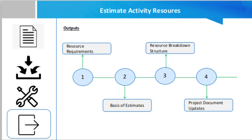Project document updates include the assumption log — the assumption log is updated with assumptions regarding the types and quantities of resources required. Additionally, any resource constraints are entered, including collective bargaining agreements, continuous hours of operations, compliance leaves, etc. The lessons learned register can be updated with techniques that were efficient and effective in developing resource estimates, and information on those techniques that were not efficient or effective.